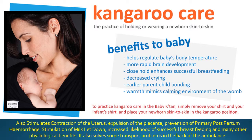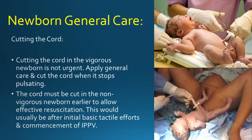It also solves some transport problems in the back of the ambulance. Newborn general care — cutting the cord: cutting the cord in the vigorous newborn is not urgent. Apply general care and cut the cord when it stops pulsating. The cord must be cut in the non-vigorous newborn earlier to allow effective resuscitation, usually after initial basic tactile efforts and commencement of intermittent positive pressure ventilation.